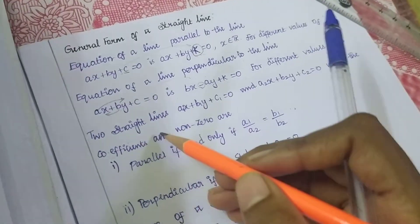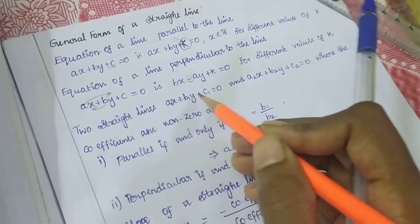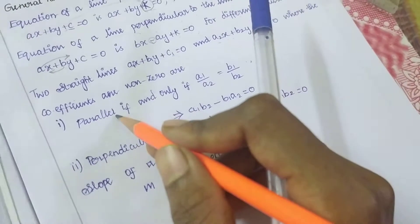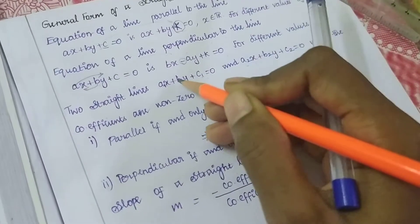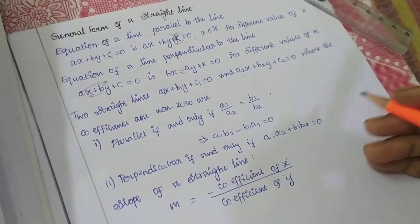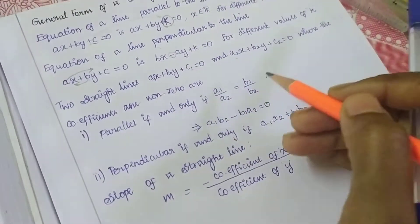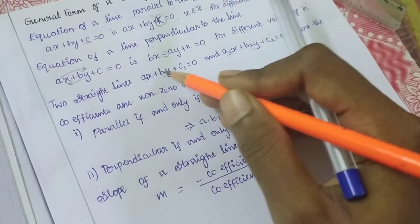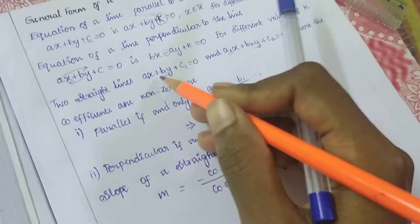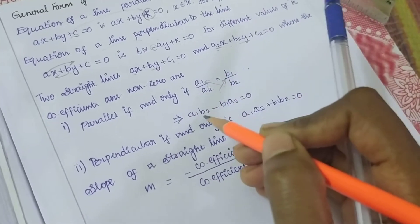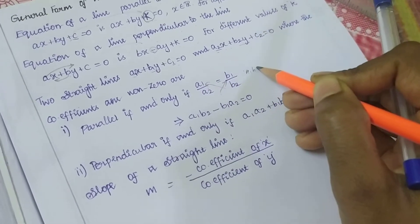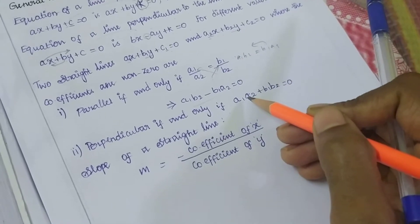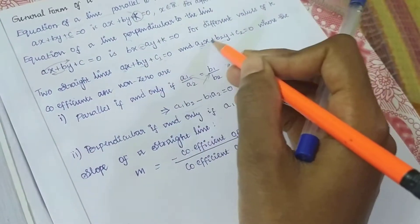For two straight lines, to determine whether they are parallel or perpendicular, we look at their coefficients. For parallel lines, a1 divided by a2 equals b1 divided by b2 — so cross multiplying gives a1 into b2 equal to b1 into a2. For perpendicular lines, a1 — the x coefficient — is multiplied with the other x coefficient, and y coefficient is multiplied with y coefficient, equal to 0.